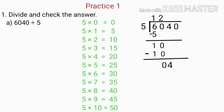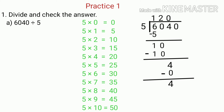We bring down the next digit, that is 4. When we compare 4 and 5, we see that 4 is less than 5. That means we have to find how many times of 5 is equal to or nearest to 4. We know that 0 times of 5 is equal to 0, which is less than 4. So we put 0 as the quotient above 4. Since 5 multiplied by 0 is 0, we write 0 below 4 and subtract — 4 minus 0 is 4.